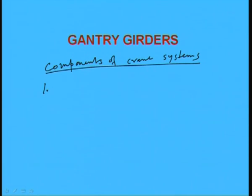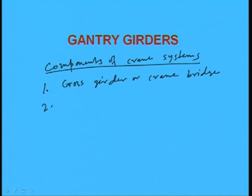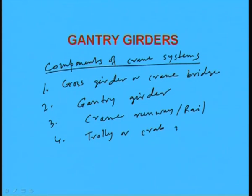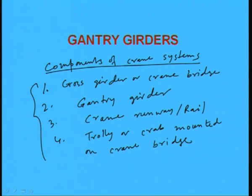One major component is the cross girder — also called the crane bridge — which is a truss-like structure. Second is the gantry girder, which we will try to design. Third is the crane runway or rail. A fourth component is the trolley or crab mounted on the crane bridge. These are the four major components of a crane system.